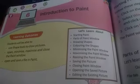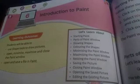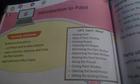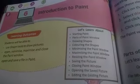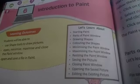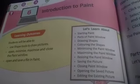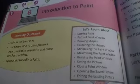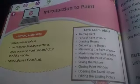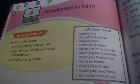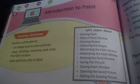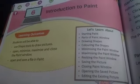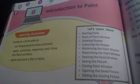Today we will start the computer annual portion, that is lesson 6: Introduction to Paint. In this chapter we will learn how to open the Paint application, learn about the parts of the Paint window, how to draw shapes using shape tools, how to minimize, maximize and close the Paint window, and how to open and save a file in Paint.